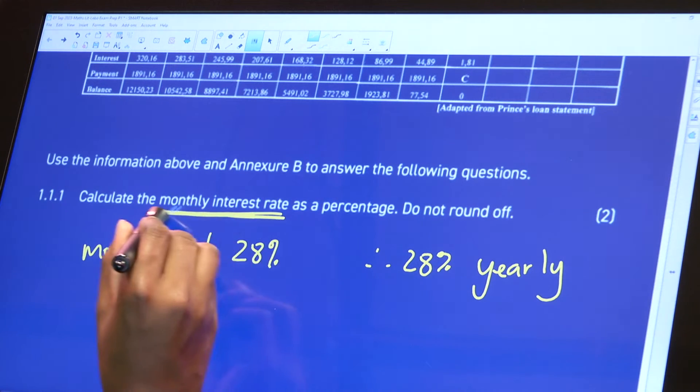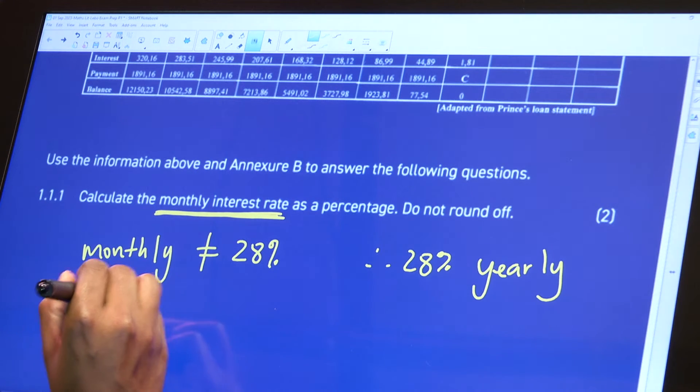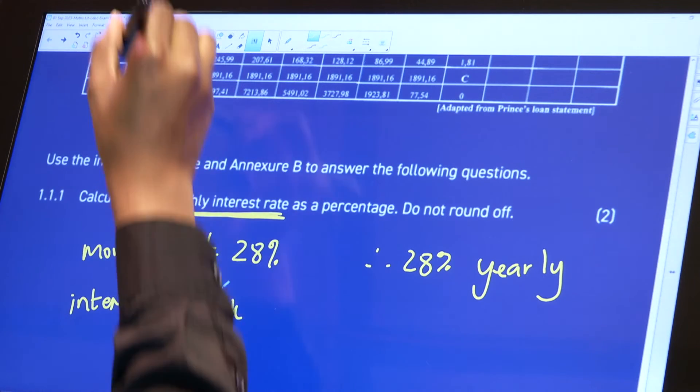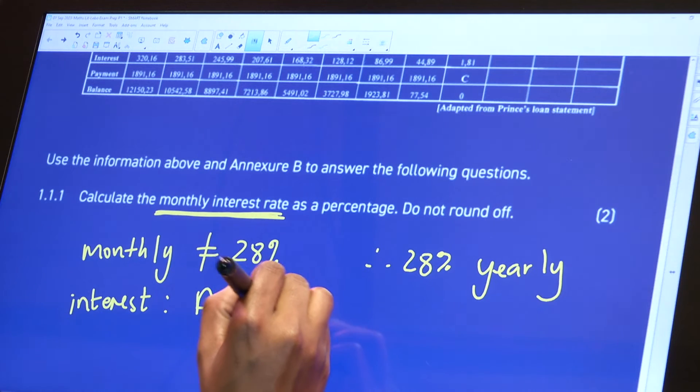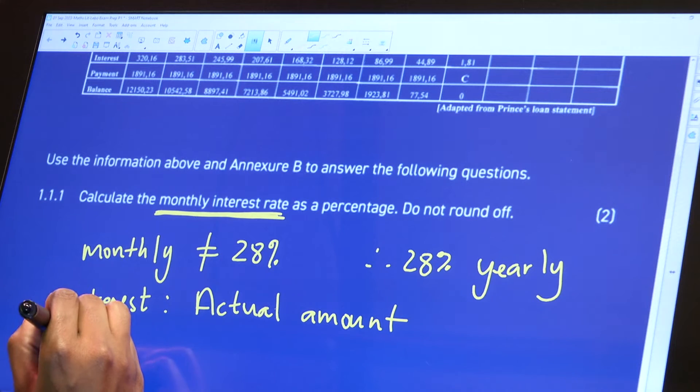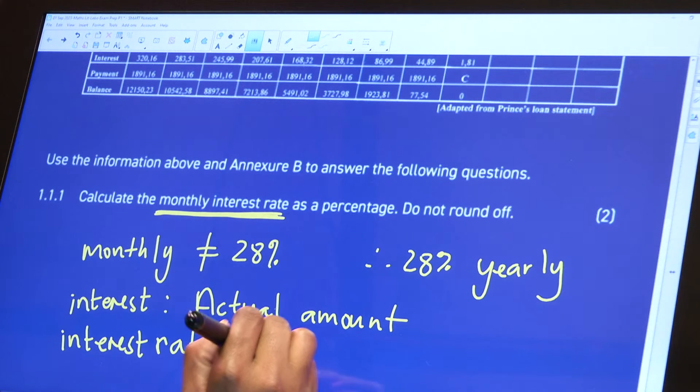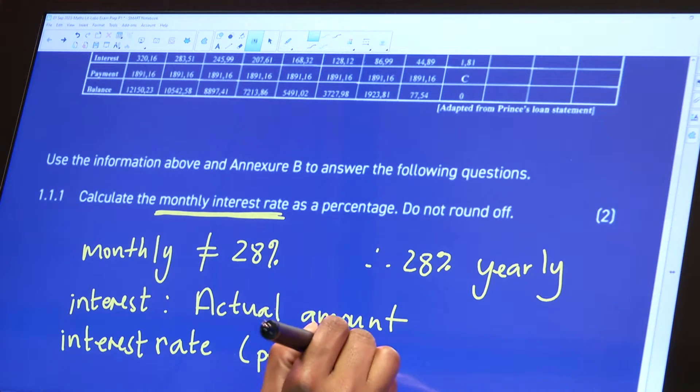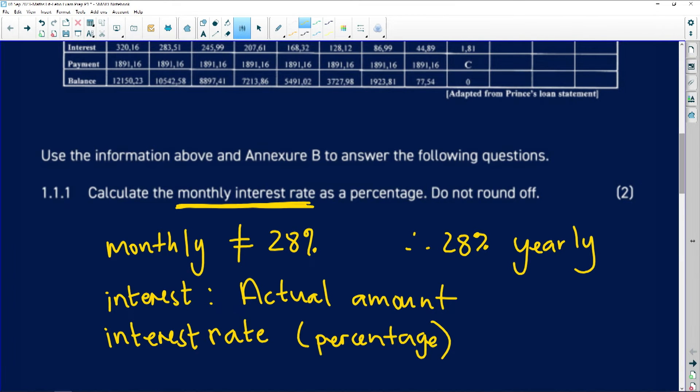So we are asked to calculate the monthly interest rate. Firstly, when we are asked for interest, we are actually asked for the actual amount. So interest is the actual amount of money. And then interest rate, you need to know the difference. Interest rate is the percentage. So please know the difference between those two, and that's definitely where we lose our marks.